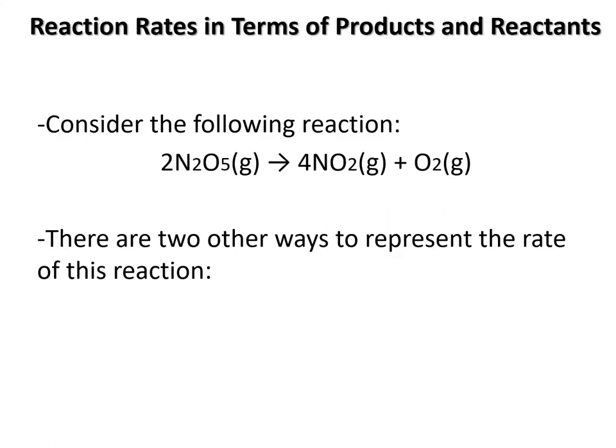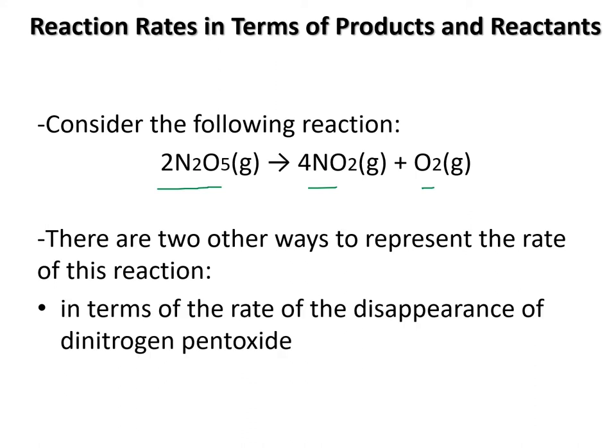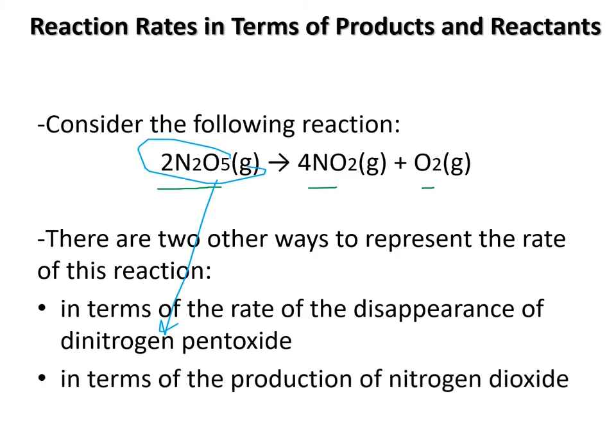So let's consider the following reaction. We've got dinitrogen pentoxide there, and it's creating nitrogen dioxide and oxygen gas. So there's two ways to represent this reaction. In terms of the disappearance of the reactant, this one disappearing. Or in terms of the production of the nitrogen, or even in terms of the production of the oxygen. So those would be increasing.